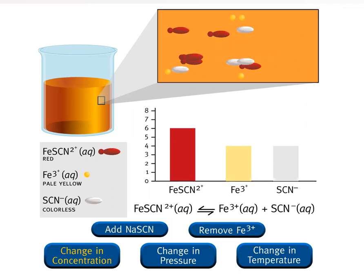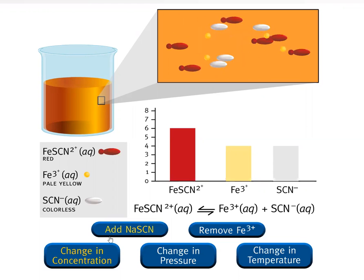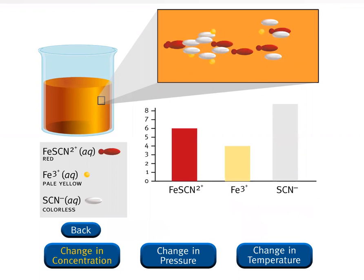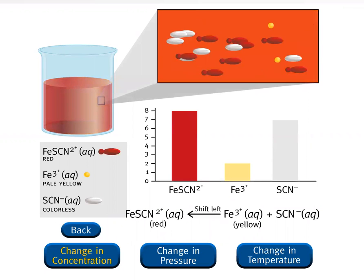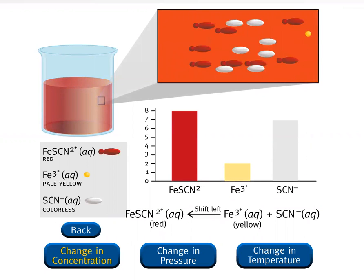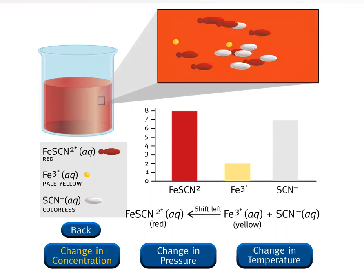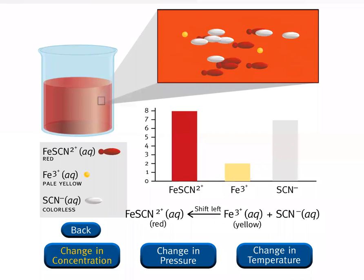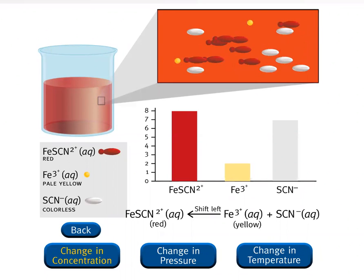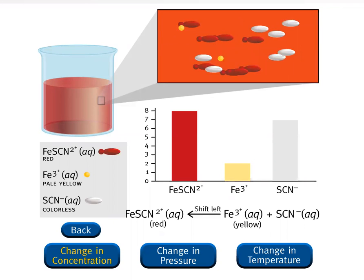The stress applied to the equilibrium system is an increase in the concentration of thiocyanate, SCN⁻, from the dissociation of sodium thiocyanate. To offset this stress, some iron 3-plus ions react with some of the added thiocyanate ions, and the system shifts from right to left to reestablish equivalence.